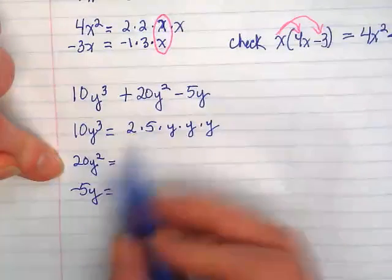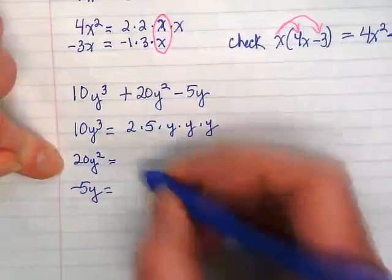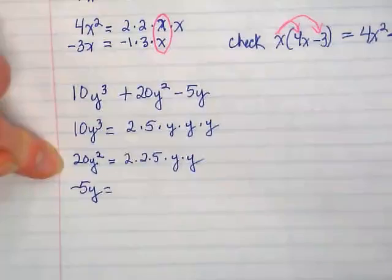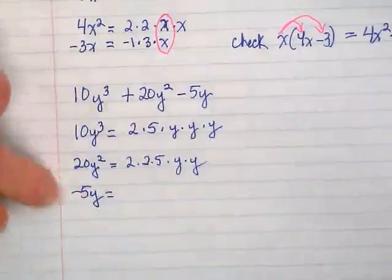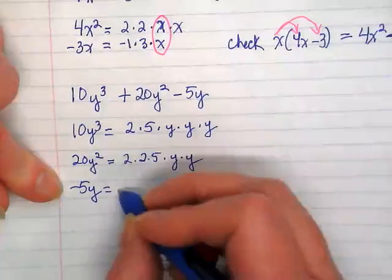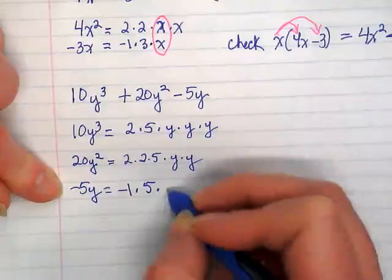What's going on with the 20? It just has one more two than this one, right? Because it's 10 times 2. And two y's. And then what about the last term? Negative 1. Negative 1 times? Five. Five times? Y.